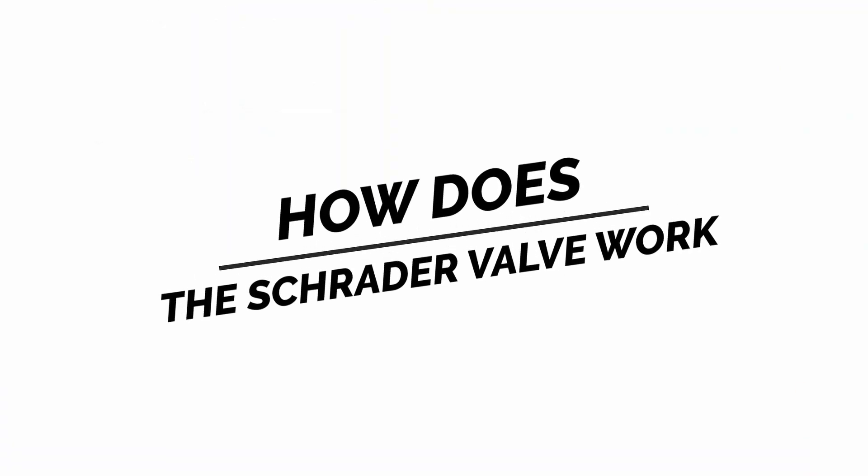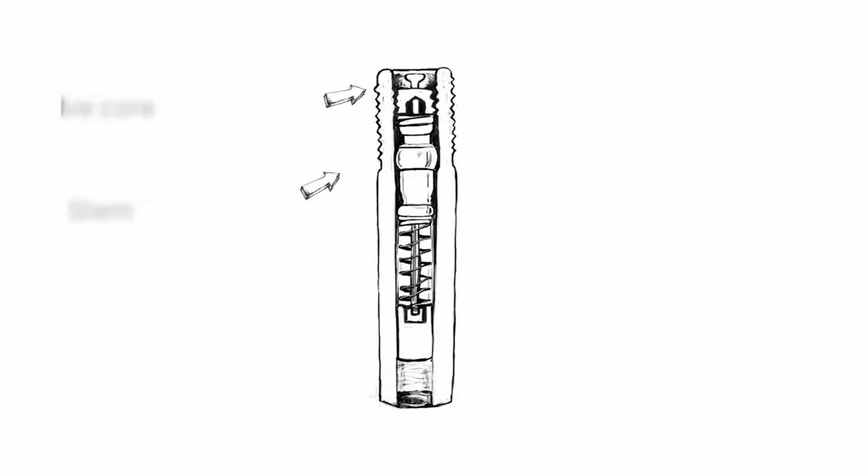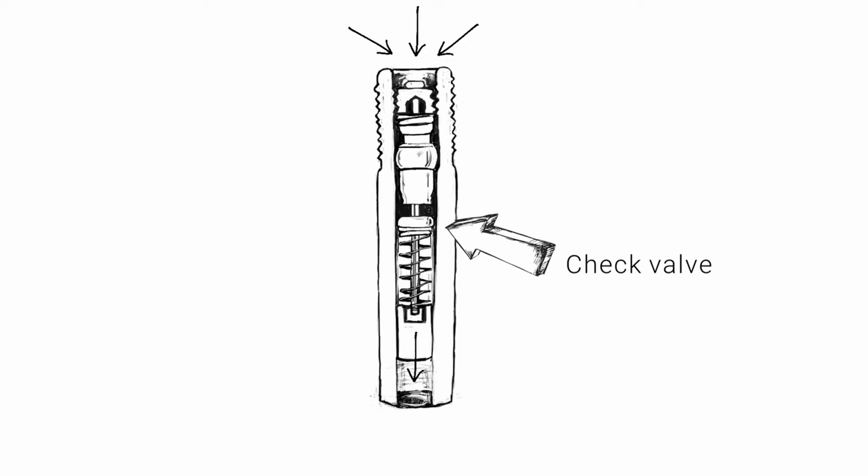How does the Schrader valve work? The Schrader valve consists of an 8 mm diameter stem into which a valve core is threaded. The valve core is assisted by a spring. This is called a check valve that is meant to allow air flow in only one direction.